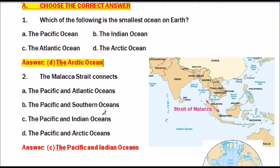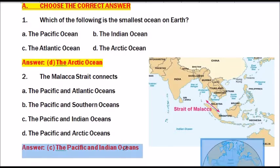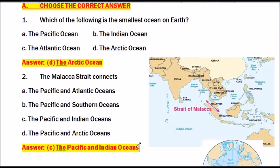Question number 2: The Malacca Strait connects which oceans? Options are Pacific and Atlantic, Pacific and Southern, Pacific and Indian, or Pacific and Arctic Ocean. The answer is Pacific and Indian Ocean. The Malacca Strait connects the Pacific and the Indian Ocean, as shown in the picture.